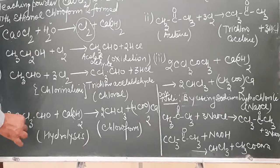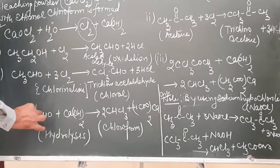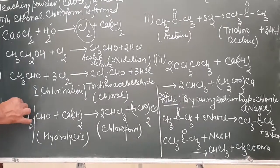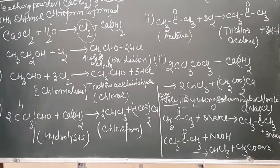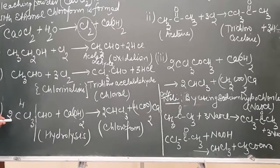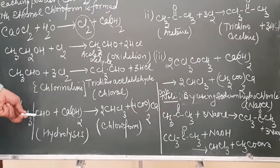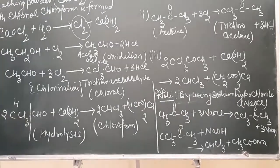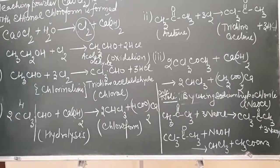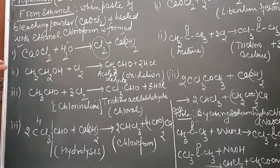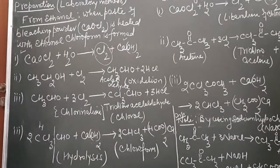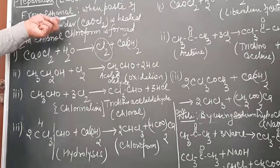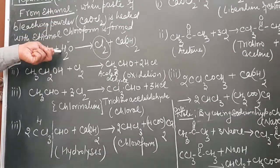The hydrolysis of chloral with calcium hydroxide results in the formation of chloroform. Two moles of chloroform are formed, and calcium formate is the other product. So this is the first method of preparation of chloroform — by the treatment of ethyl alcohol with bleaching powder.